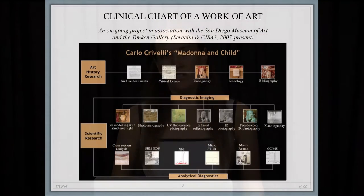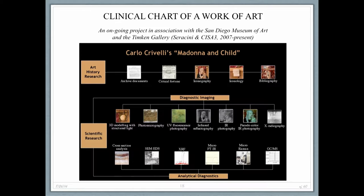One of the projects that CHISA III has undertaken is to characterize the clinical chart of a work of art — where should we put the data, and what type of data is collected when we're looking to analyze a work? Just like the clinical chart in medicine, the clinical chart of a work of art will house all the data and information we know about its history. It begins with art historical research, archival documents, bibliographies, chronologies, and historical books on the artist, as well as scientific research documenting the work through imaging techniques and chemical analysis.